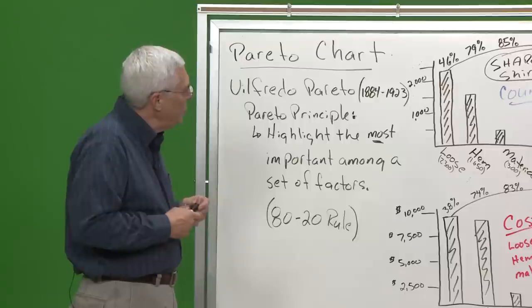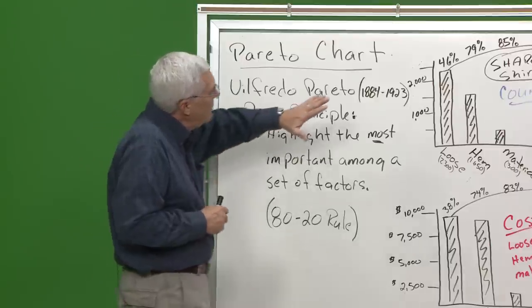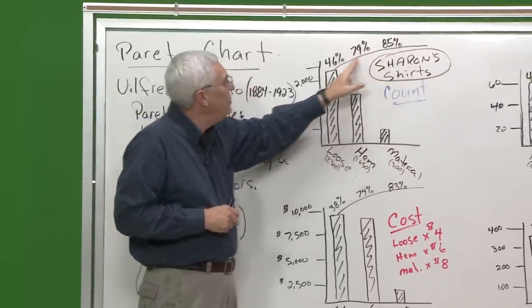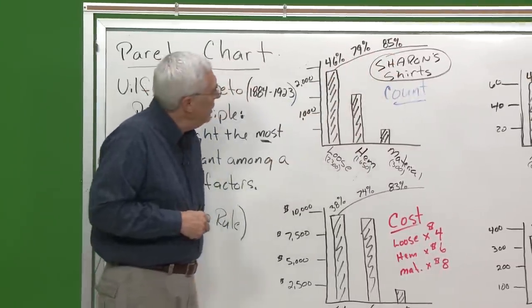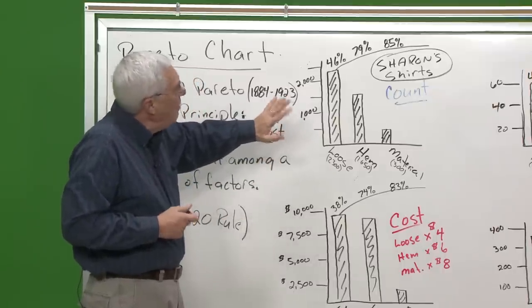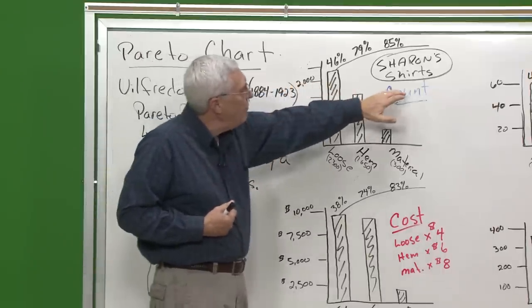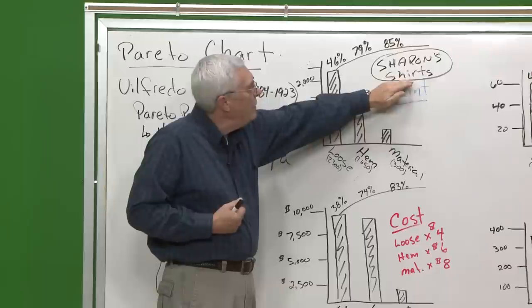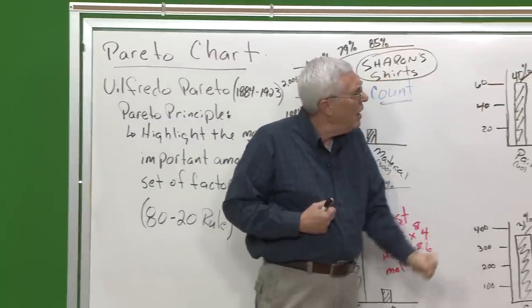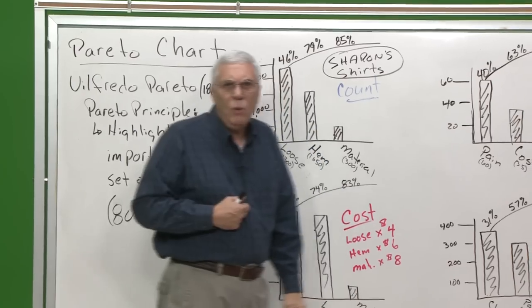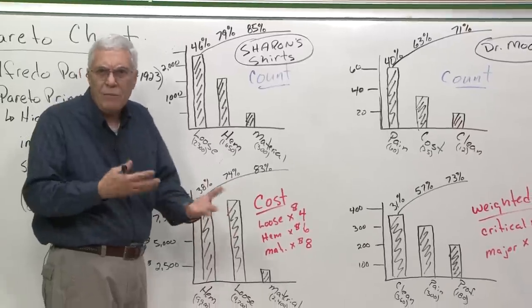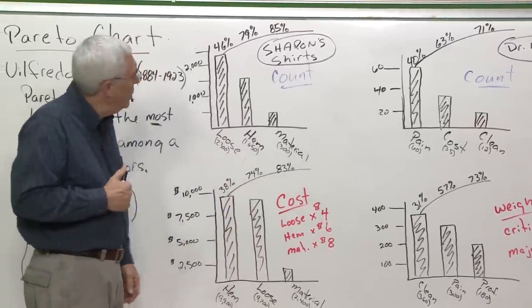So, the Pareto is a combination chart. It is a chart that has a bar as well as a line, and the line is referred to as the Pareto line. Now let me quickly show you how to get to these. Before I continue, on Blackboard you actually have a copy of Sharon's shirts completely done, and you have a copy of Dr. Moore's survey completely done.